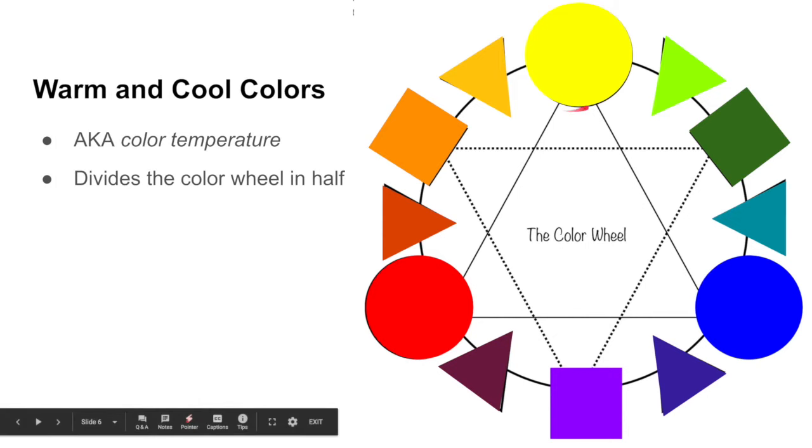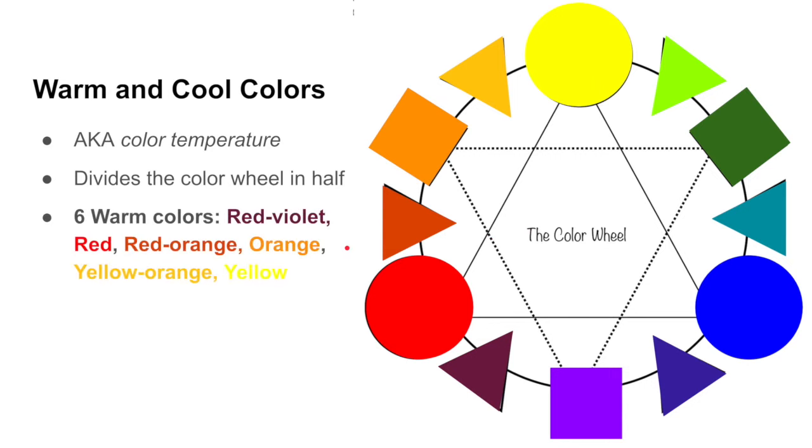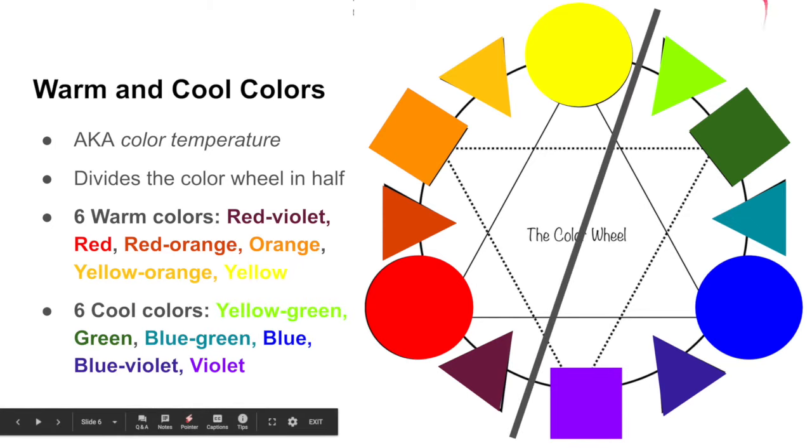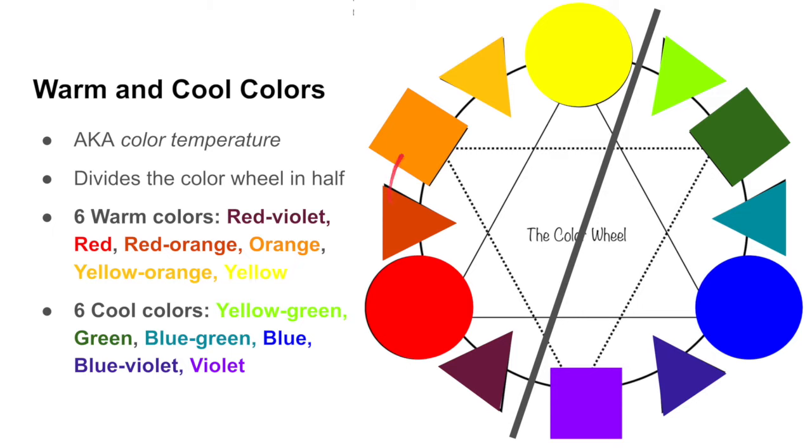When we look at the color wheel, warm and cool colors end up dividing the color wheel in half. And so there are six warm colors and six cool colors, and we divide it in half in between yellow and violet over here. So our warm colors are red-violet, red, red-orange, orange, yellow-orange, and yellow.